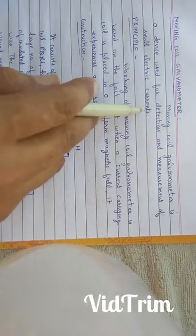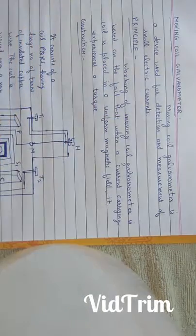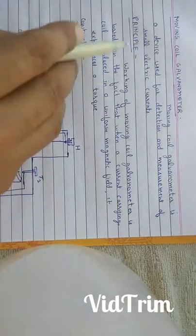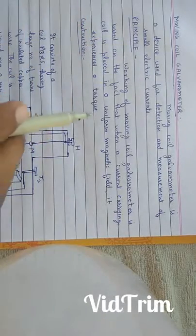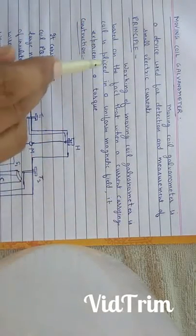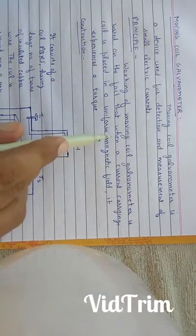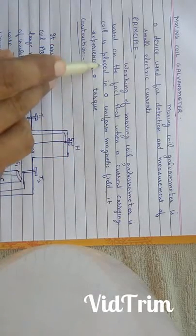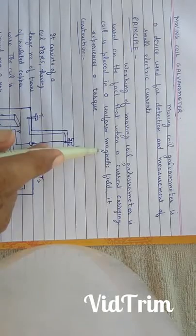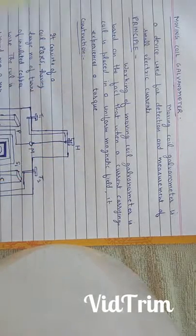Moving coil galvanometer detects and measures small electric currents. Principle of moving coil galvanometer: Working of moving coil galvanometer is based on the fact that when a current carrying coil is placed in a uniform magnetic field, then the coil experiences a torque.